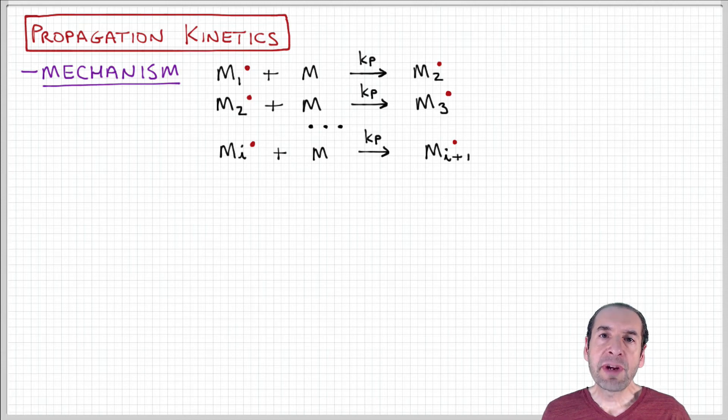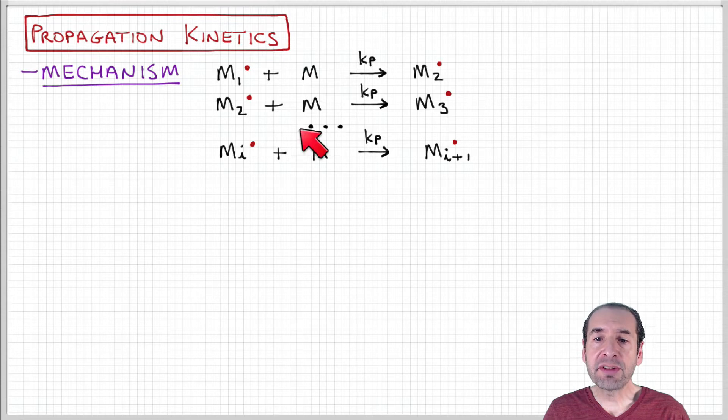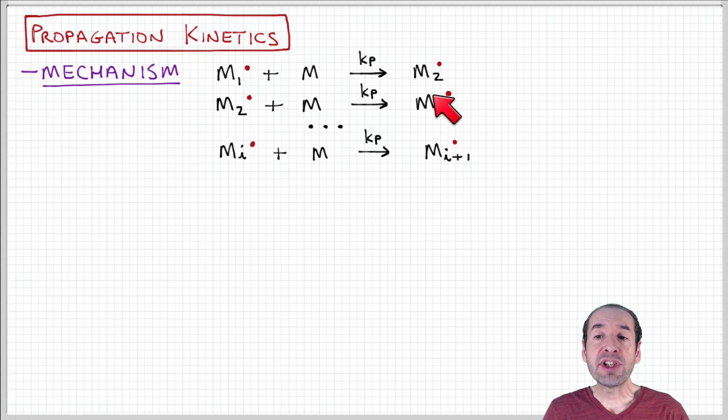The next step in free radical polymerization is propagation. This mechanism involves taking active chains of different lengths and having them add a monomer to form another active chain that is one monomer longer in degree of polymerization than the previous chain.